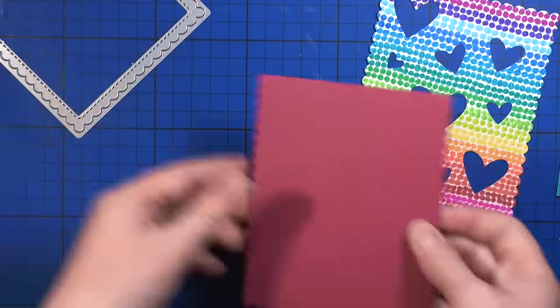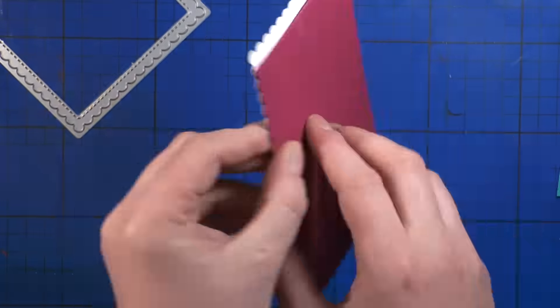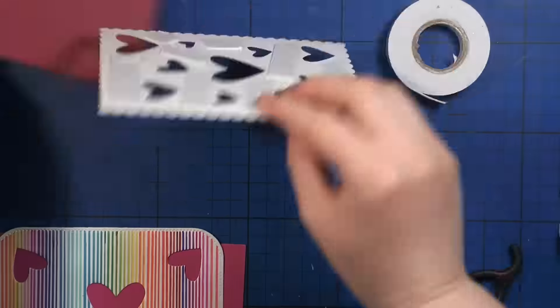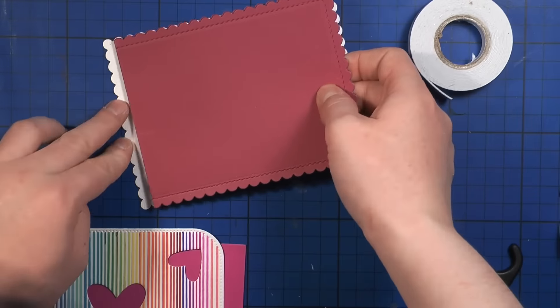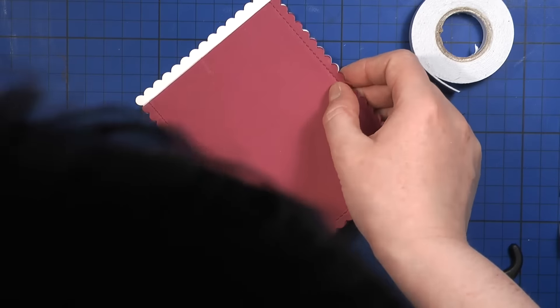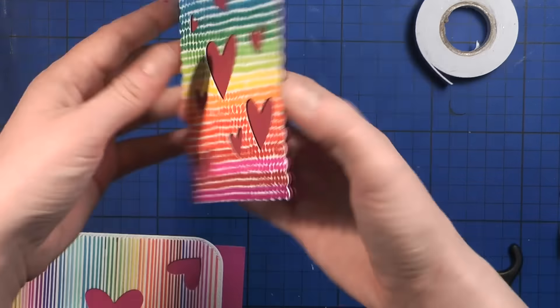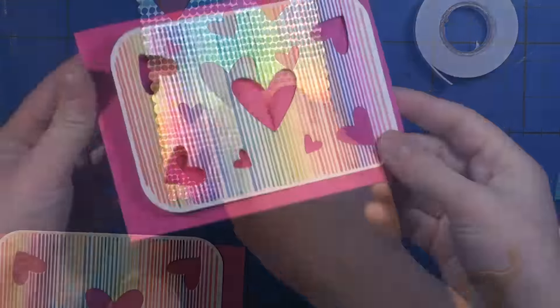And here it is already. I wanted it to be smaller than the card front, or rather the same size, because I wanted to hide it behind it. I added some foam tape on the back of my card front and adhered my card base.